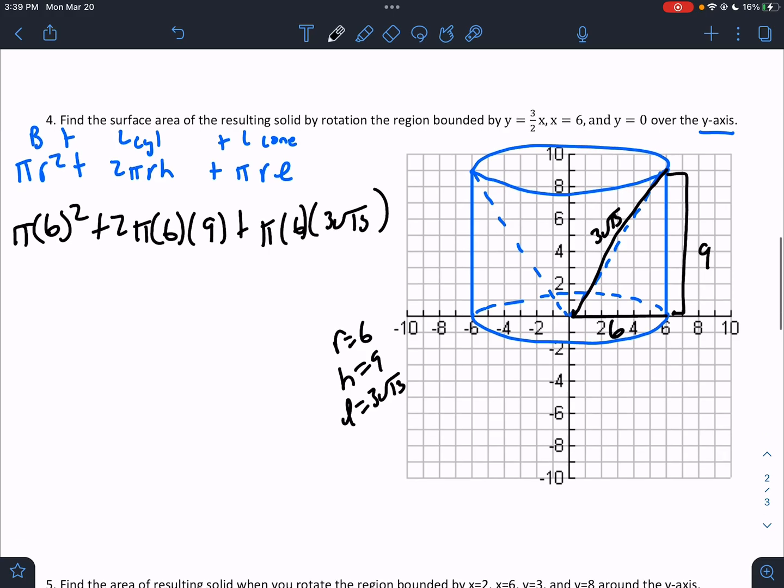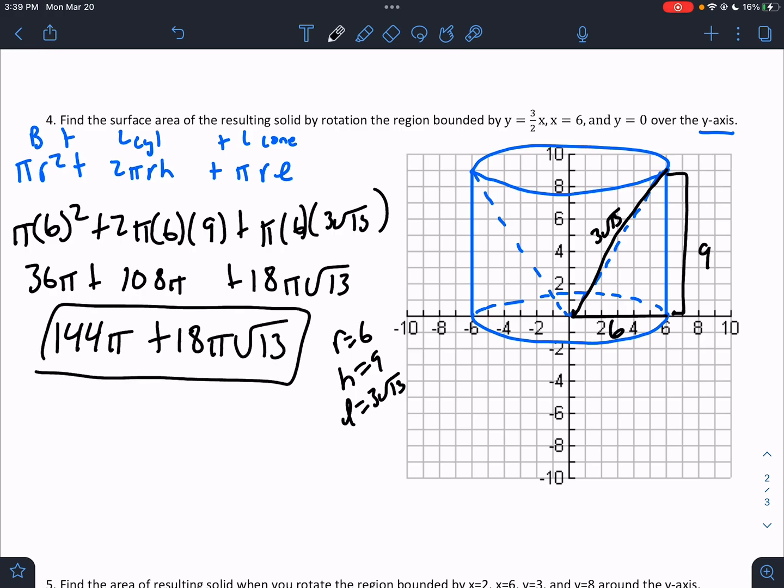Pi times 6 – yeah. So those are the pieces. This would be 36 pi. This would be 108 pi. And then this is going to be 18. There's a pi and a root 13. Combine like terms, I get 144 pi plus 18 pi root 13. There we go.